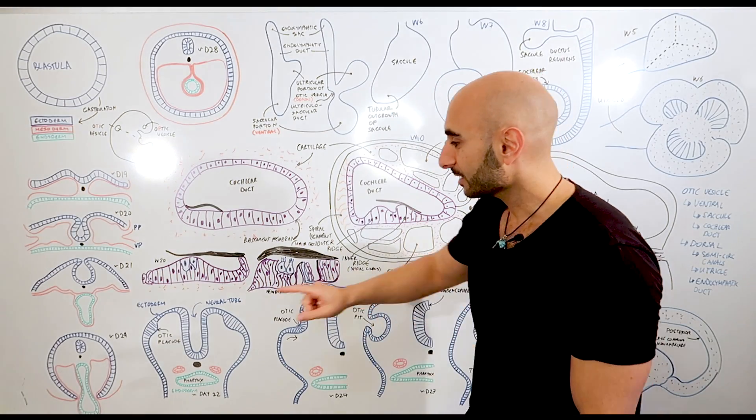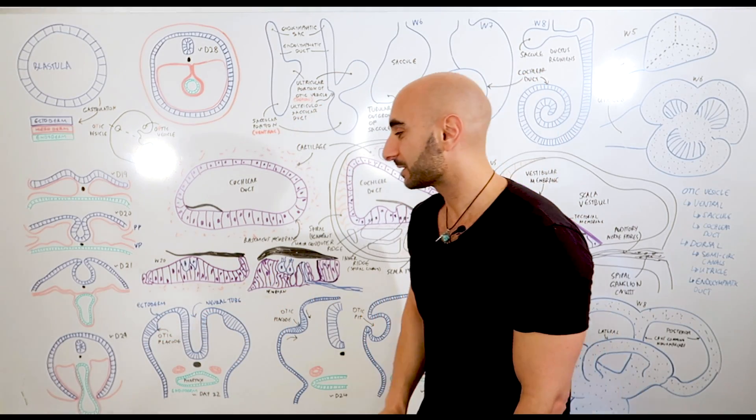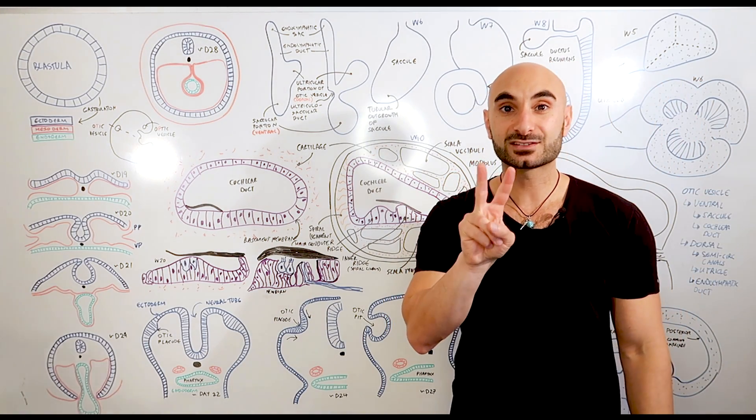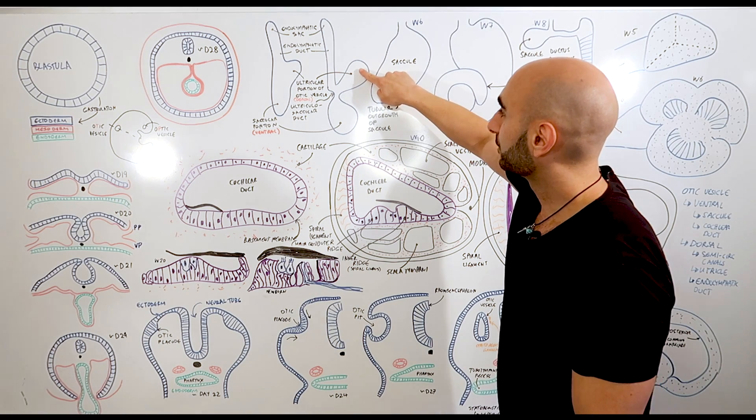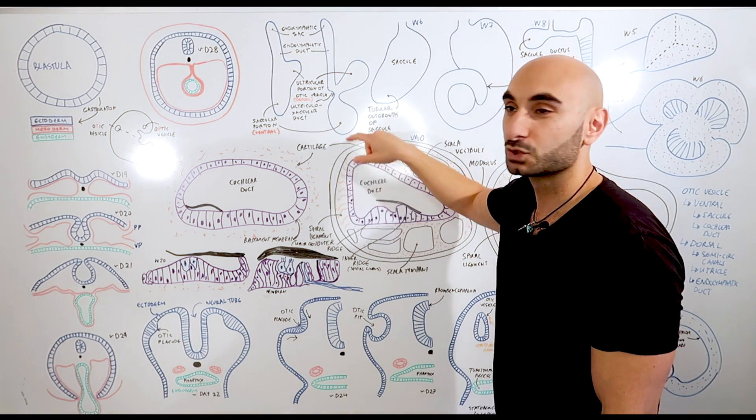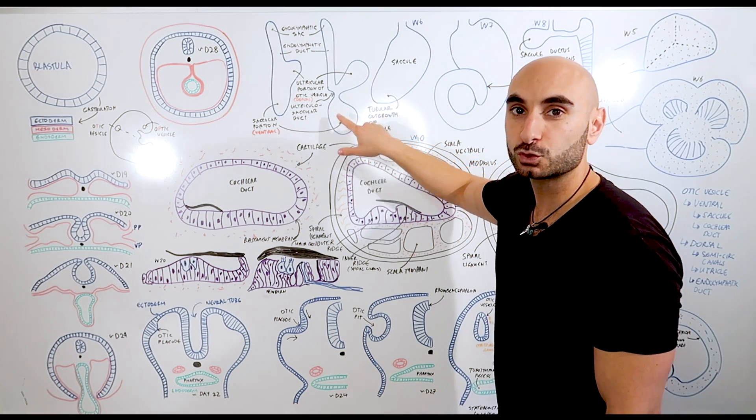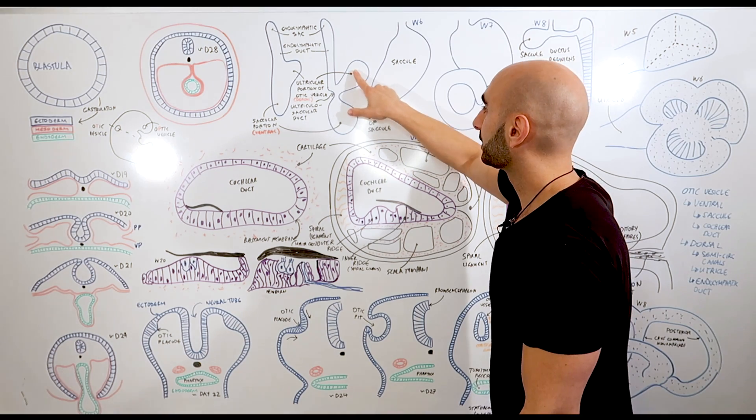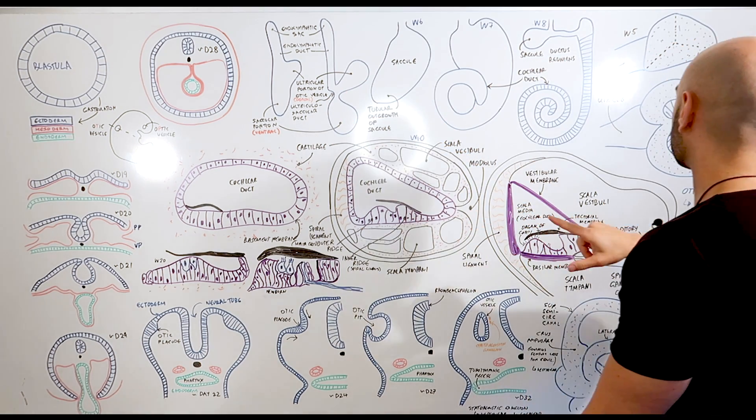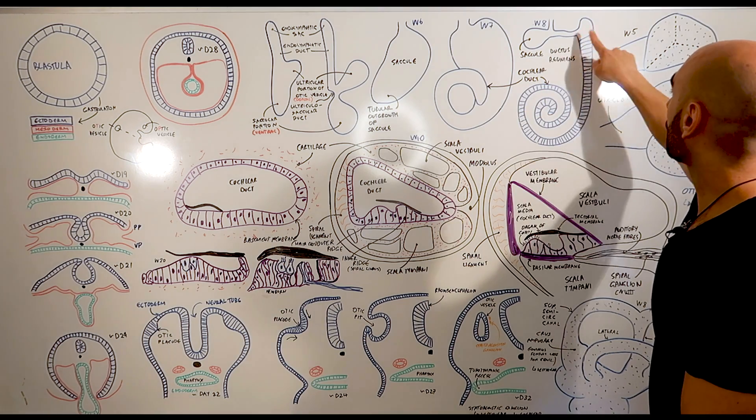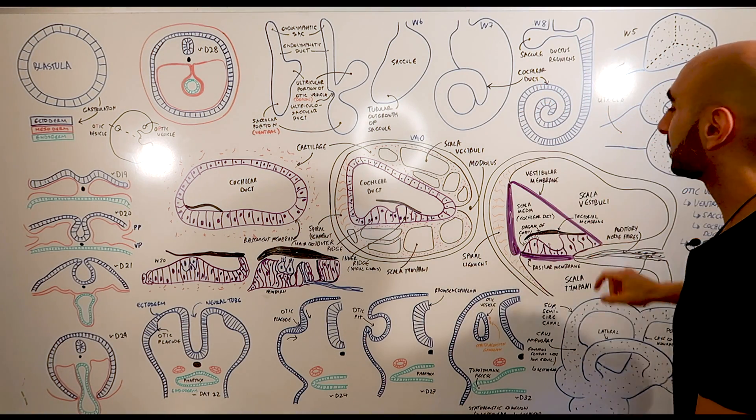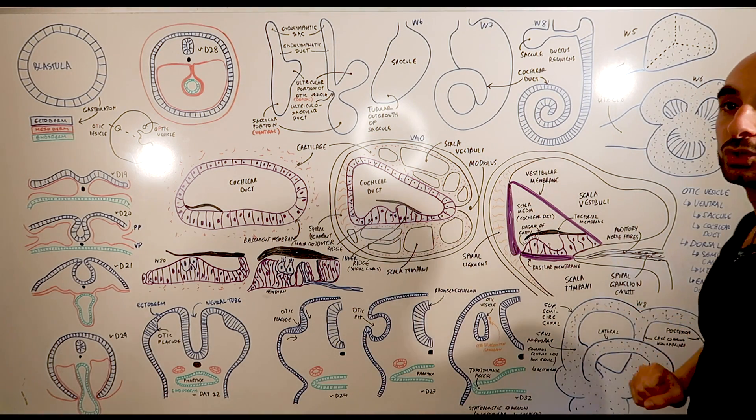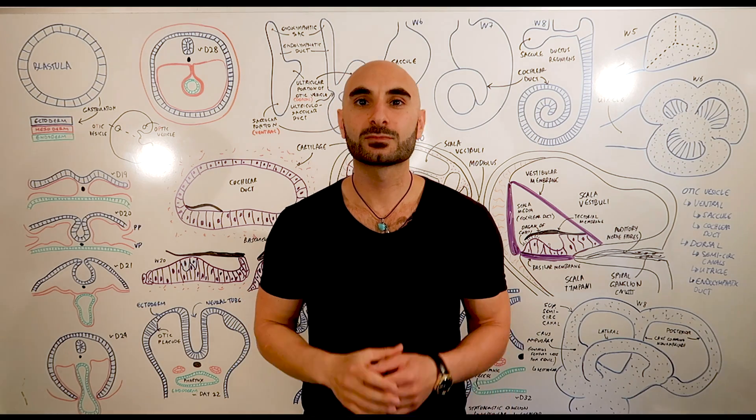So the inner ear: first we have an otic placode coming from ectoderm. It will pinch off becoming an otic vesicle. The otic vesicle has two parts - the dorsal portion or the utricular portion, and the saccular or ventral portion. The ventral portion will become the saccule and the cochlear duct. The dorsal portion will become the semicircular canals and the utricle and the endolymphatic duct. That's it.